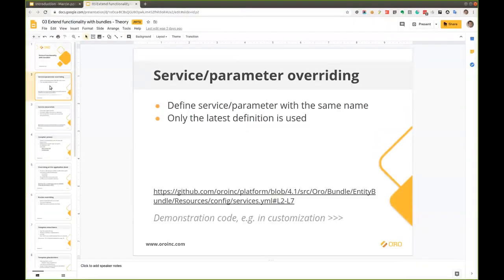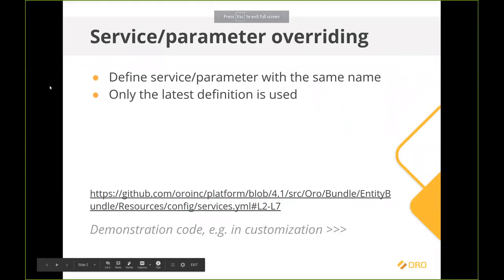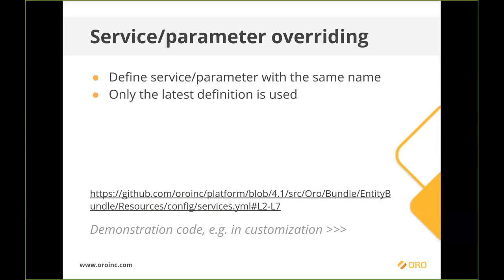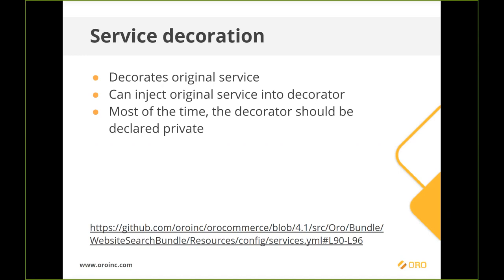Let's continue from yesterday's presentation. We talked about service overriding — the simplest possible way is to just override it using the same name. It is not extendable, and only the last definition will be used. A better approach is to decorate the service, where you can create a chain of decorators with fallbacks. A more complex but fully flexible method is compiler passes, where you can change the class, add method calls, and work with tags.